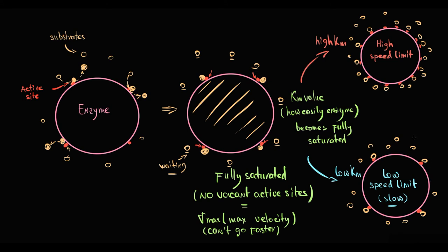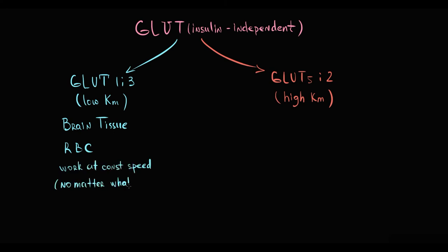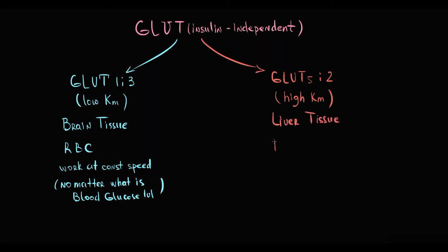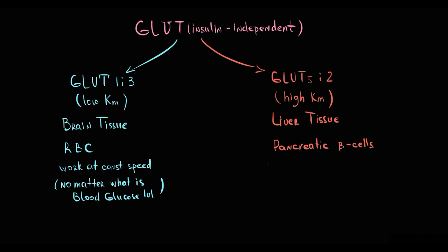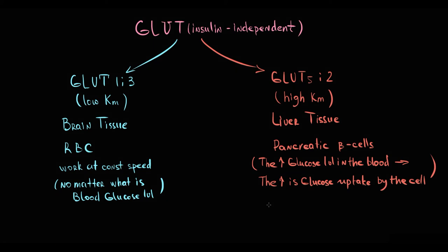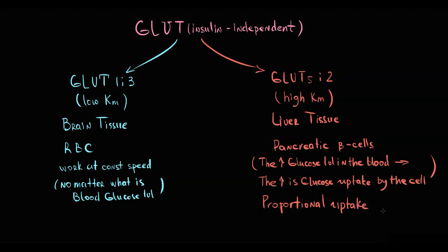Because of their low Km values, GLUT 1 and GLUT 3 transporters in brain tissue and red blood cells transport glucose at a constant speed regardless of blood glucose concentration. Whether blood glucose is 5 mmol or 15 mmol, red blood cells and brain tissue always take up glucose at the same rate. In contrast, GLUT 2 in liver tissue and pancreatic beta cells has a very high Km value, meaning the higher the blood glucose concentration, the more rapidly these tissues take up glucose — proportionally to glucose level in the blood.